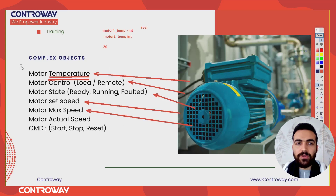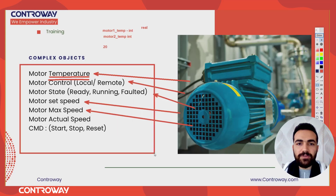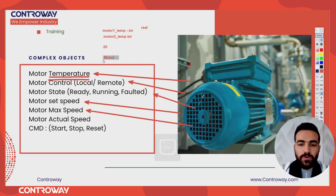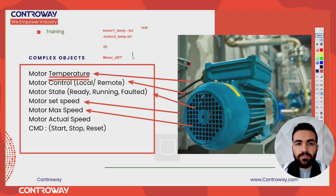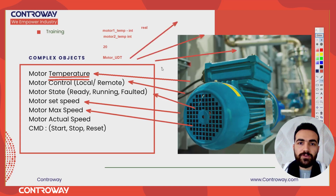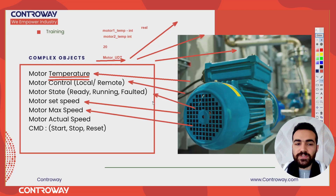So why not make something simpler? We make a package — a special type of data — that includes all these variables and we give it a name like 'Motor UDT'. Then I make copies of this data type: the first one, the second one, the third one — up to 20 times. If I need to update anything inside this data type, it will be updated automatically. We will see how to do this in TIA Portal.